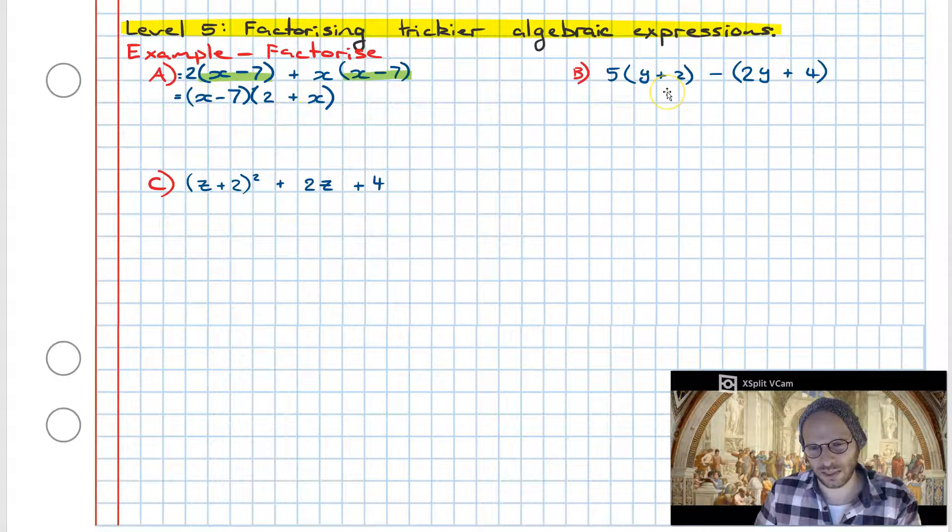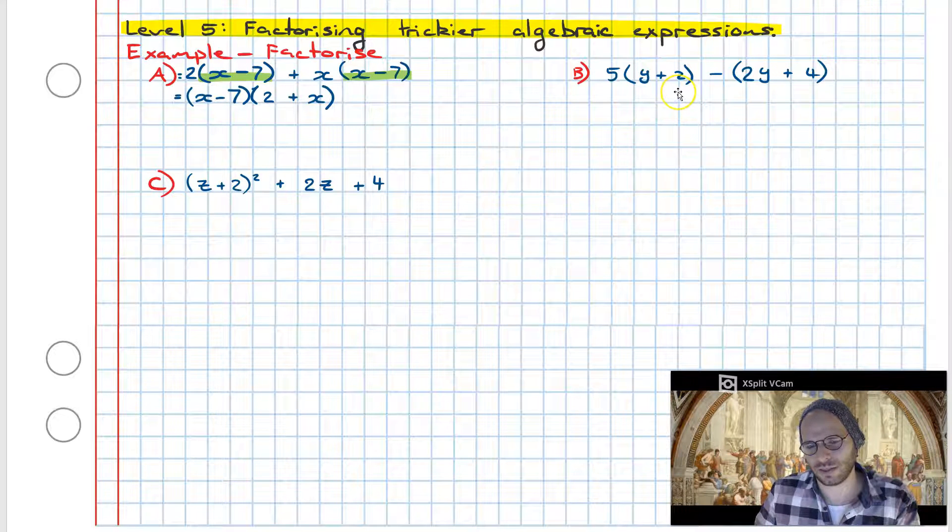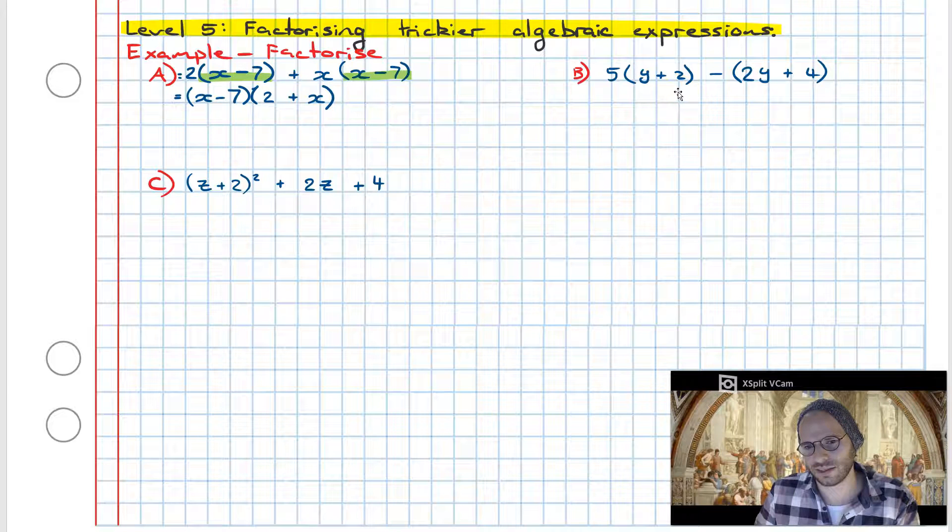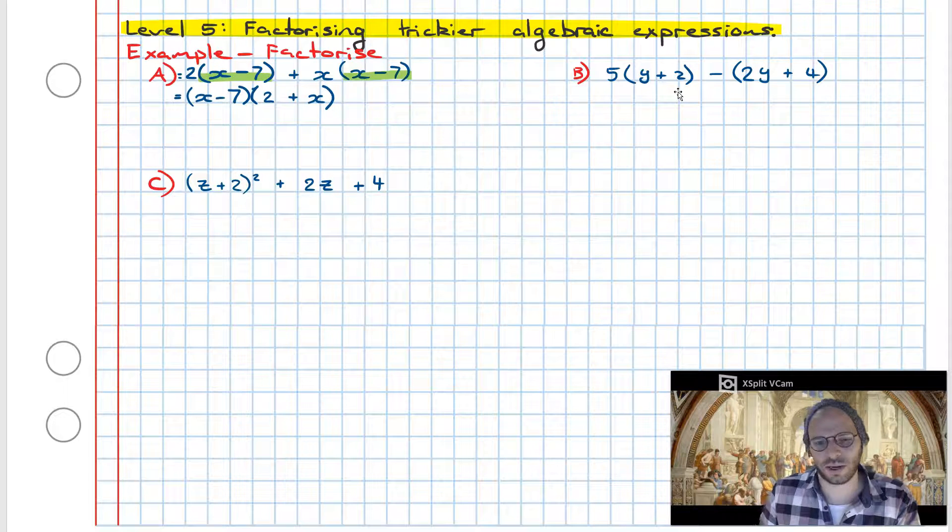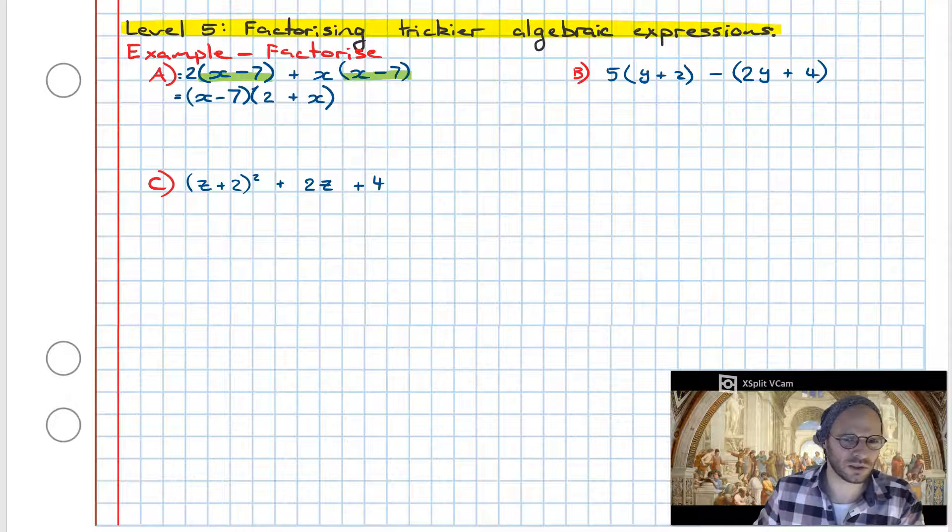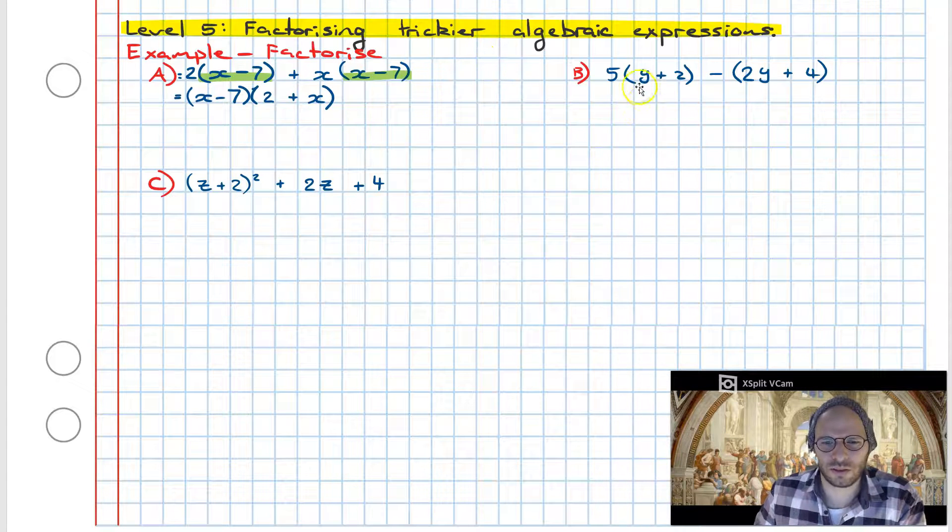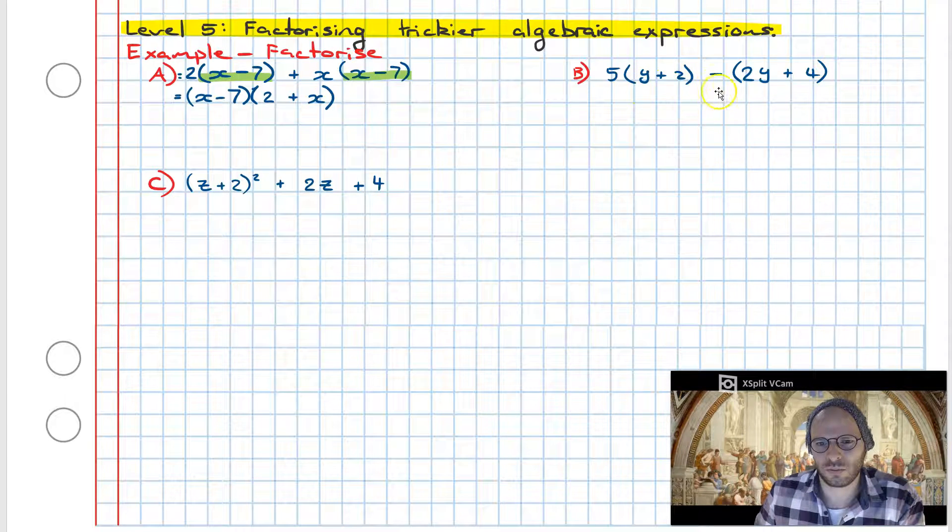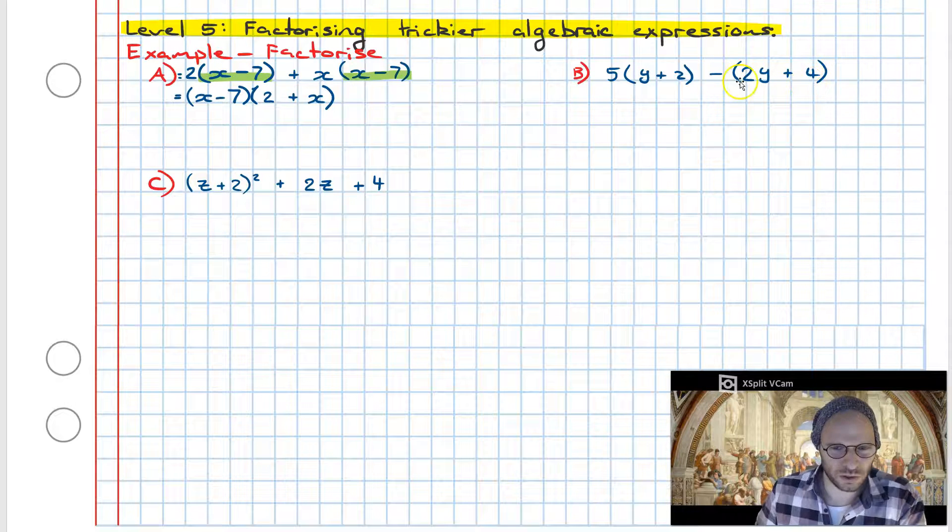Now example B: we have a similar situation however the distance between us and success is an extra step away. If we have a look at the two terms we have 5 multiplied by y plus 2 minus 2y plus 4. What you're going to notice here is at this point in time there's nothing in common.